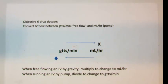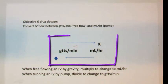What I have on the screen shows that Objective 6 involves converting IV flow between drops per minute, or gravity flow, and milliliters per hour by IV infuser or by pump. In the center portion, you can see drops per minute on the left, milliliters per hour on the right.